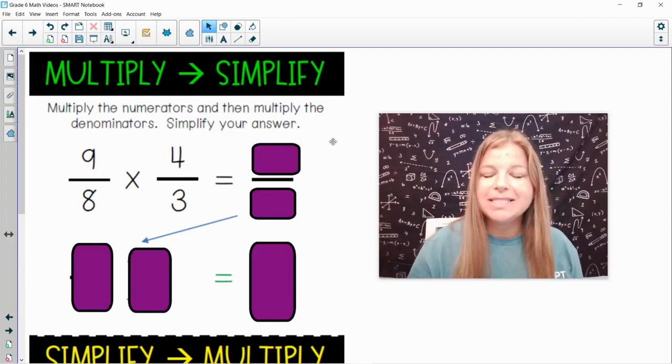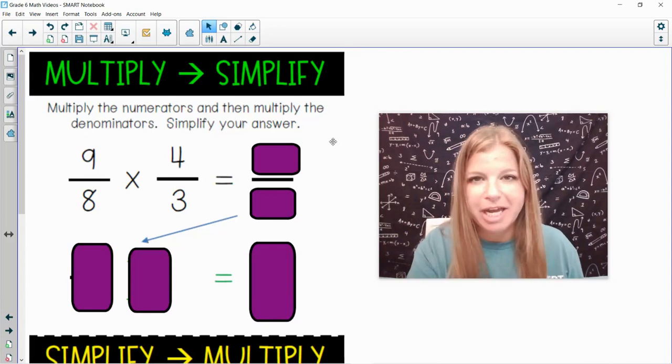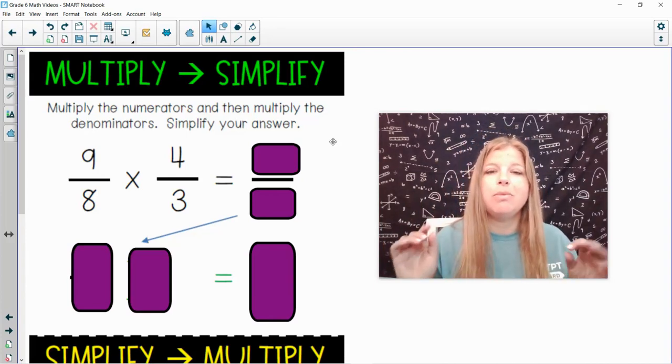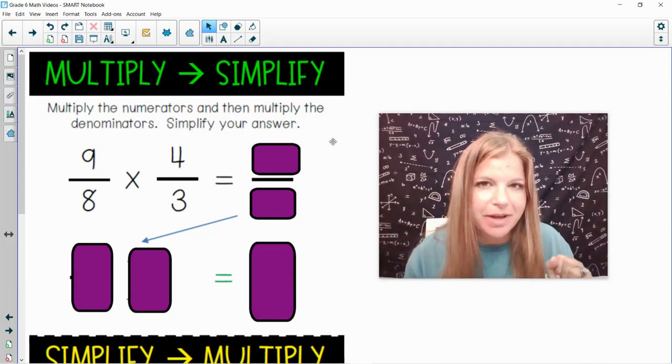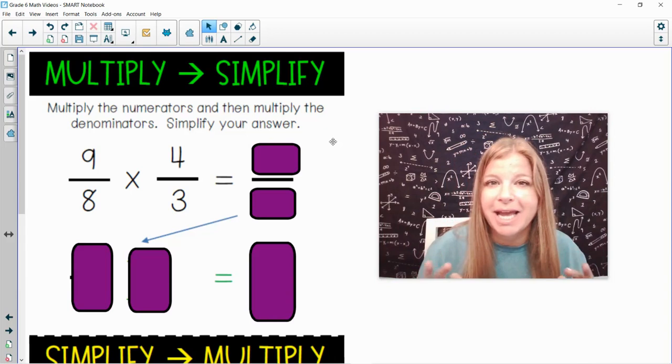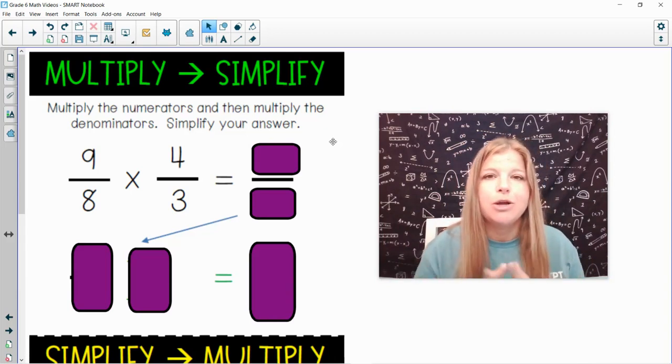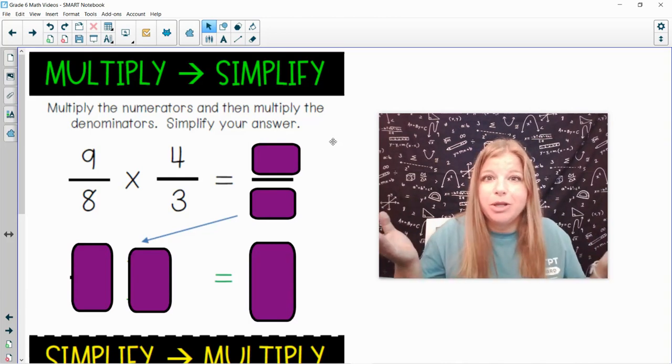Hey everyone! In this lesson video, we are multiplying fractions and we're going to do it with two different strategies. We're first going to multiply fractions by just simply multiplying straight across and then simplifying. And then in the second half, we're going to simplify what we can first and then multiply. No matter what, we're going to get the same answer.